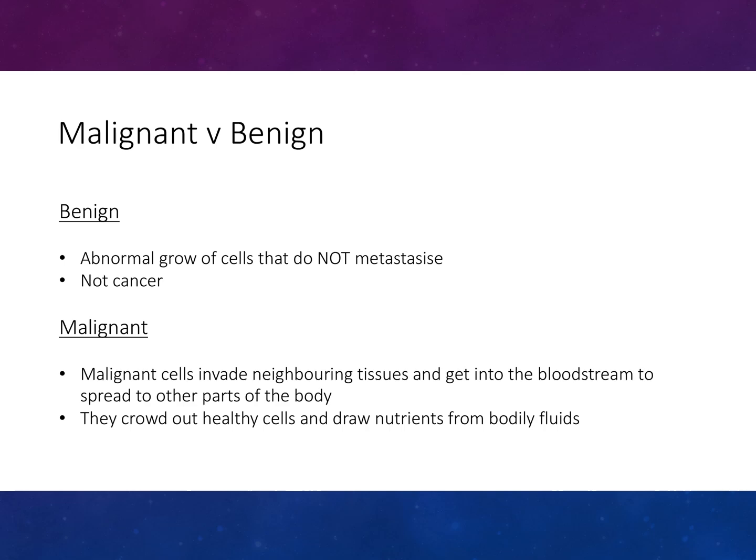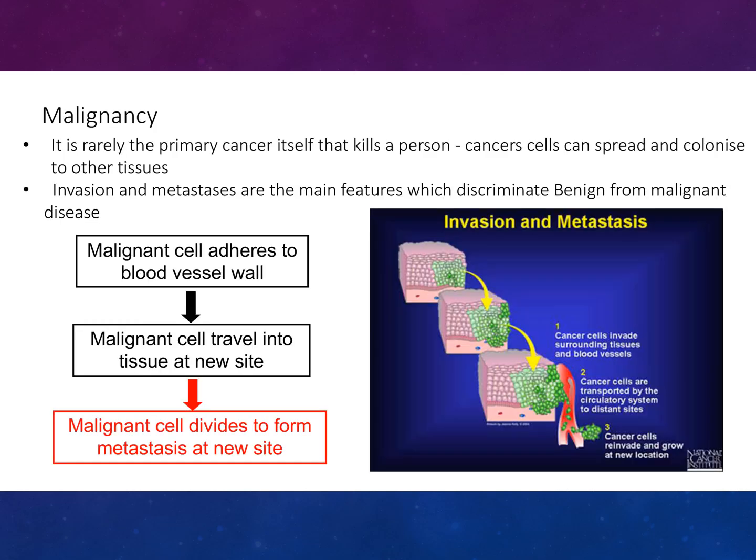Looking at benign versus malignant: benign involves abnormal growth of cells that do not metastasise and is not classified as cancer. Malignant cells invade neighbouring tissues and get into the bloodstream to spread to other parts of the body, crowding out healthy cells. It is really the primary cancer itself that kills the person, and invasion and metastasis are the main features that discriminate benign from malignant disease.